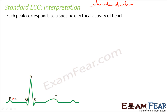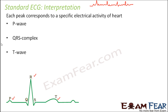Let us understand the significance of the P wave, QRS complex, and T wave — the three important parts of the ECG output. The P wave indicates the excitation and contraction of the auricles. When the electrical impulses are generated, the first thing that happens is contraction of the auricles, and that is denoted by the P wave. Next is the QRS complex, which shows the excitation and contraction of the ventricles. After the auricles contract, the electrical impulses reach the ventricles via the bundle of His, and the ventricles contract — this is denoted by the QRS complex.